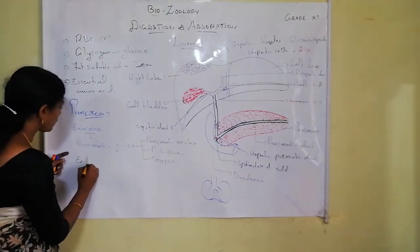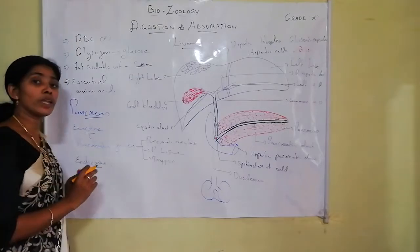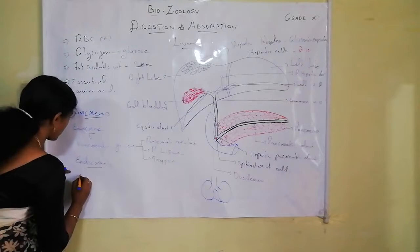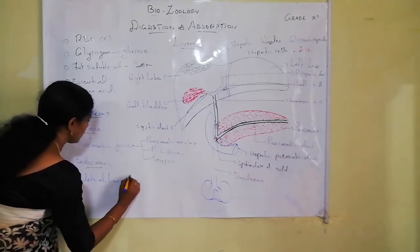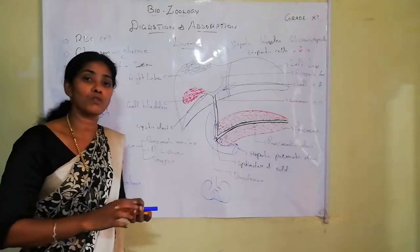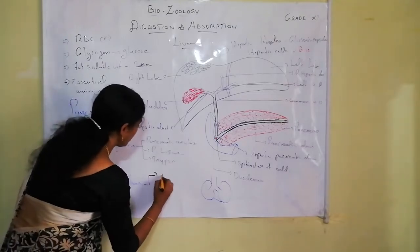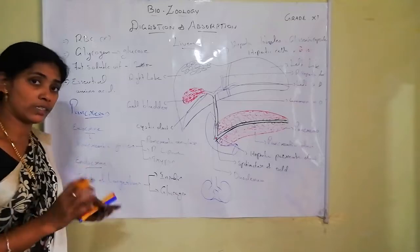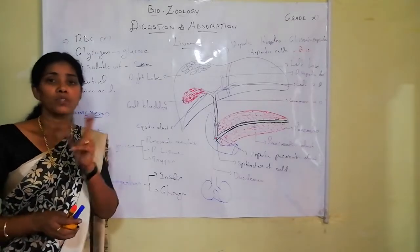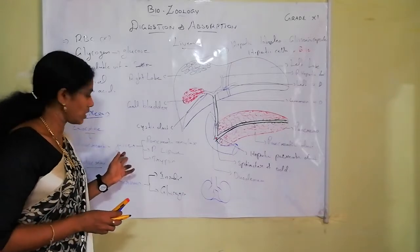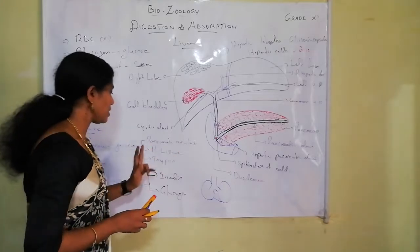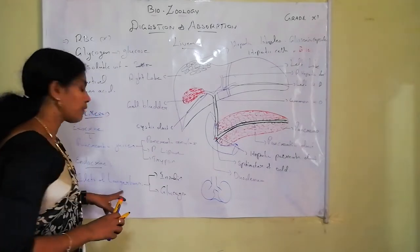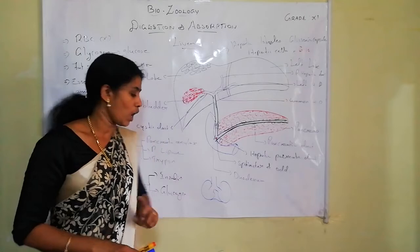The endocrine role of the pancreas involves specialized tissues called islets of Langerhans, which produce hormones — insulin and glucagon. So the pancreas performs a dual role: exocrine (producing pancreatic juice) and endocrine (producing insulin and glucagon).